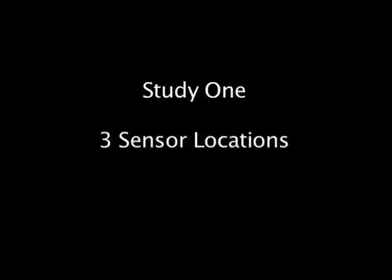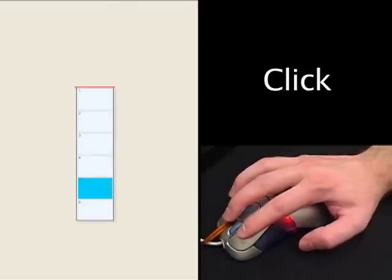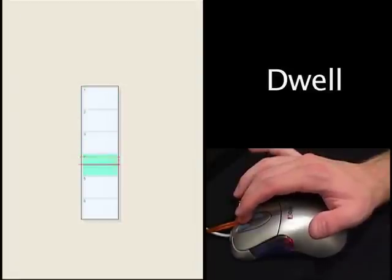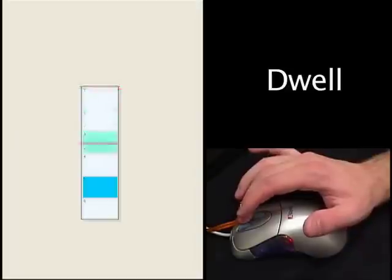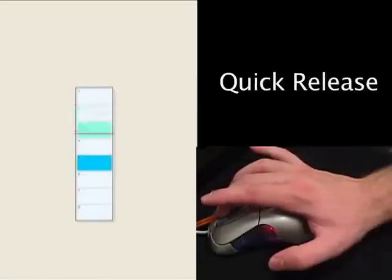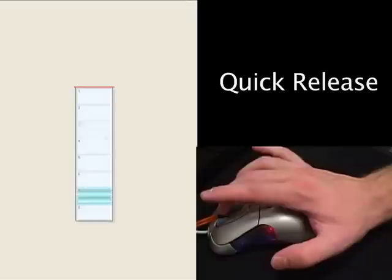Final selection was controlled by one of three selection modes. In click mode, targets are selected by clicking the left mouse button while the desired target is highlighted. In dwell mode, targets are selected by maintaining pressure on the desired target for an interval of one second. In quick release mode, targets are selected by highlighting the desired target and quickly releasing pressure from the sensor.